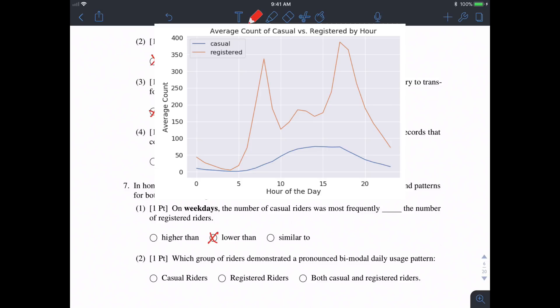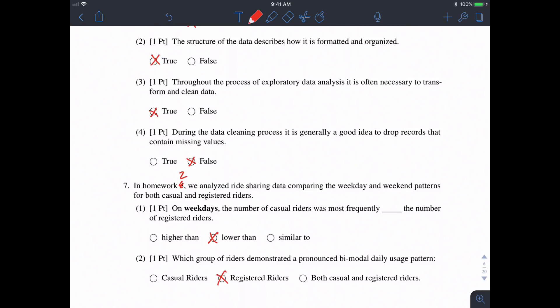Part B: Which group of riders demonstrated a pronounced bimodal daily usage pattern? From the diagram, around seven or eight o'clock and around five o'clock in the afternoon, there were two peaks for the registered riders, whereas the casual riders had only one peak. So the registered riders had a bimodal usage pattern.